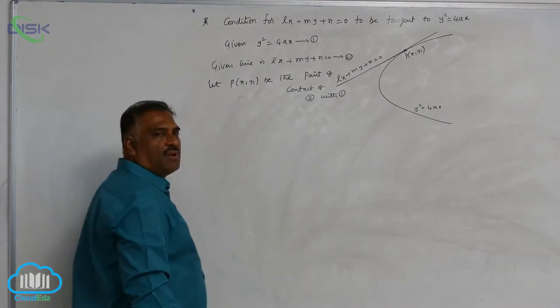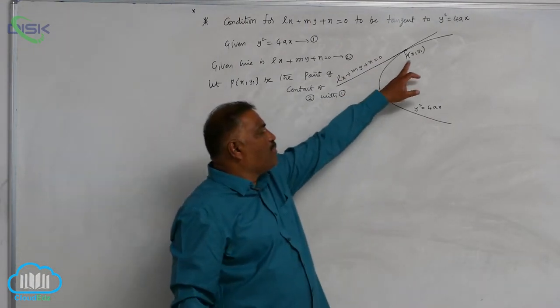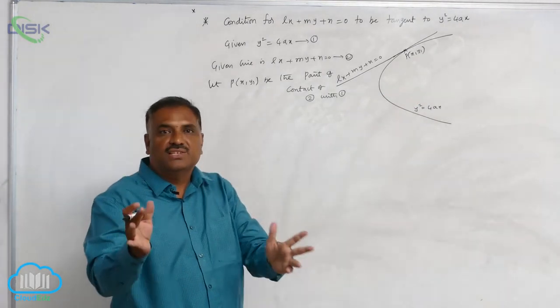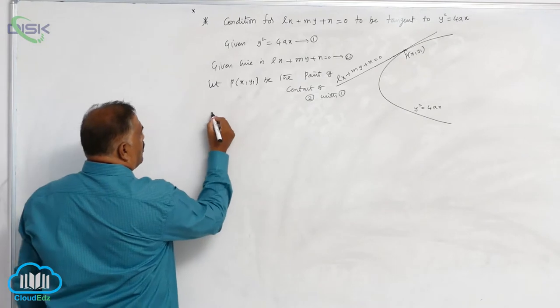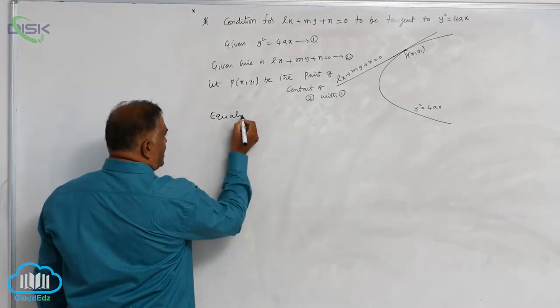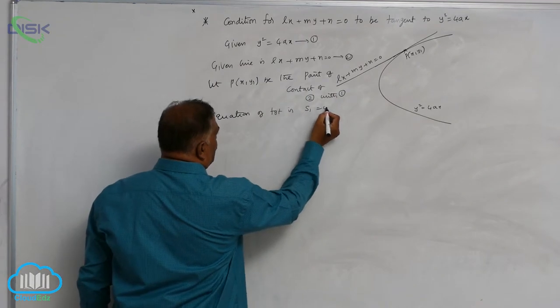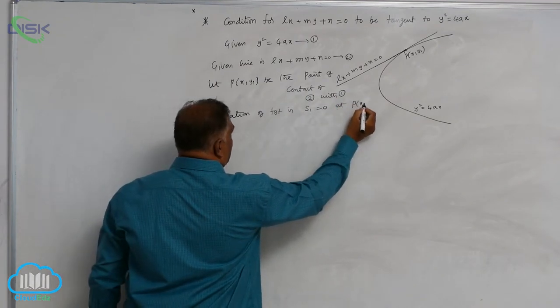From our discussion, when the point lies on the curve, you know that equation of tangent is s1 equal to 0. So, equation of tangent is s1 equal to 0 at px1 comma y1.